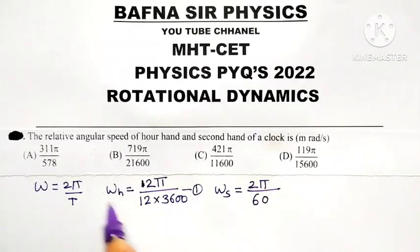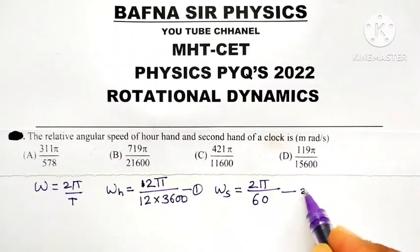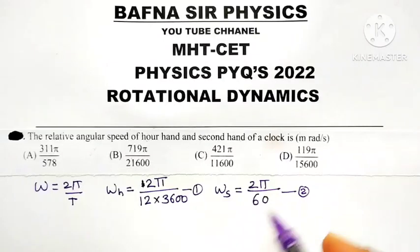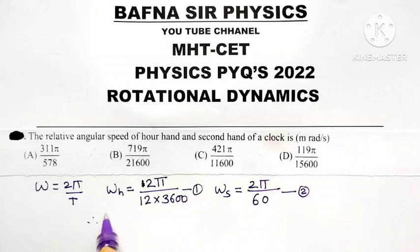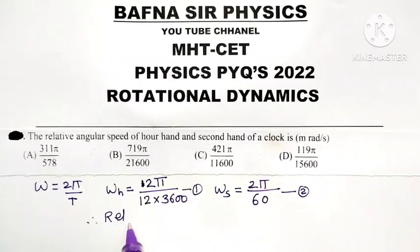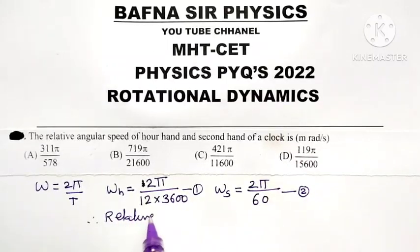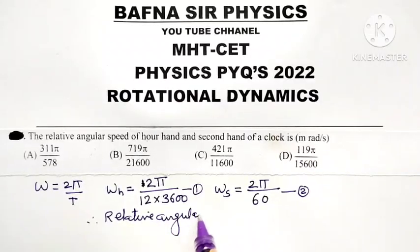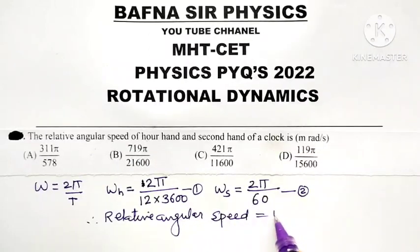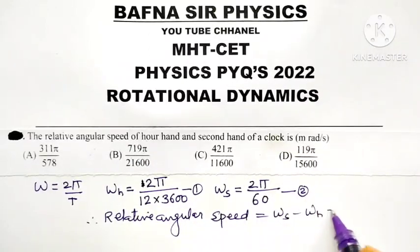So we are having two equations, one is angular speed of hour hand and other is angular speed of second hand. Naturally omega s is greater than omega h. Therefore, relative angular speed means it is difference. So relative angular speed is equal to omega s minus omega h.